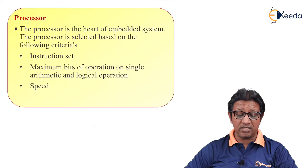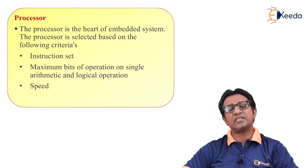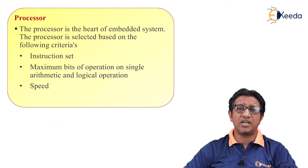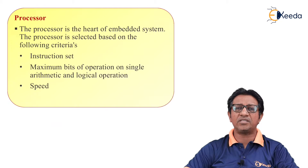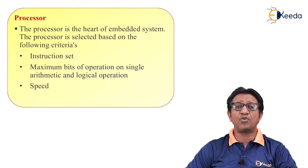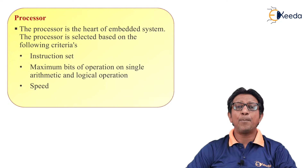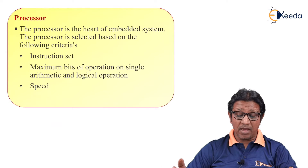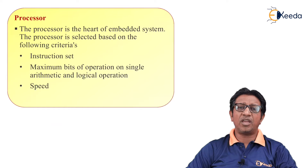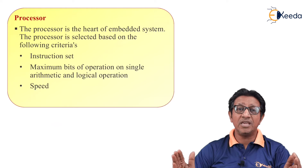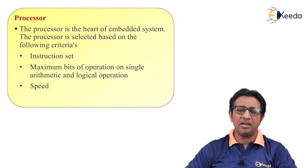The instruction set should have simple, less complex instructions with a smaller number of instructions, so that the assembly language program can be easy and the system can perform better. Next is the maximum number of bits in a single operation. Whether taking 4-bit, 8-bit, or 16-bit, the system will perform better when operating on 16 bits of data at a time.